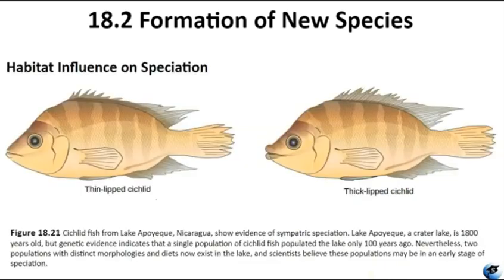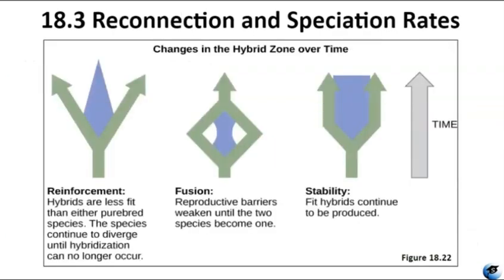Habitats can also influence speciation in ways other than polyploidy. If a fish population grows and competition for food increases, some fish may discover a new food source at a different depth of the lake. Over time, these fish will interact more with each other and breed together, staying separate from their original population. If they remain isolated long enough, sympatric speciation can occur as they accumulate more genetic differences. These scenarios of reproductive isolation are found in nature, like in Lake Victoria, Africa, where cichlid fish have undergone hundreds of sympatric speciation events, developing different traits and now in the process of speciation.